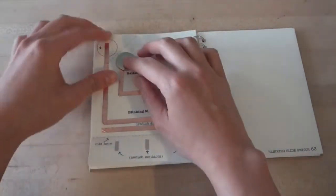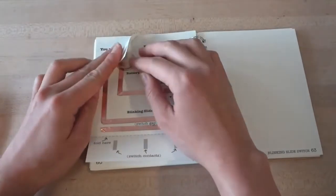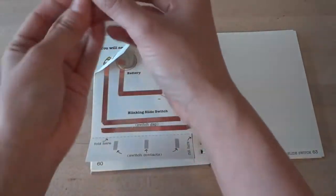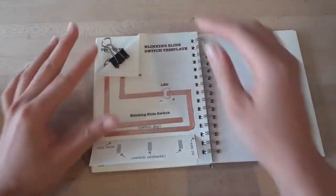Now create a battery holder by folding down the top left corner of your page along the dotted line. Then clip your battery in with the plus side up.